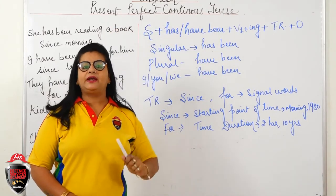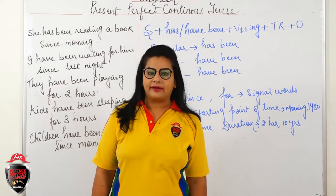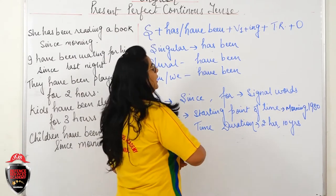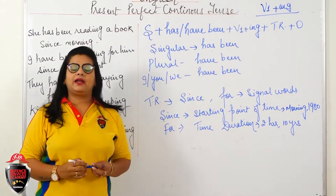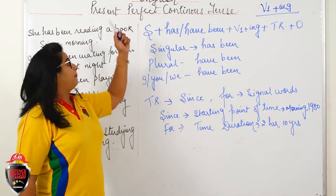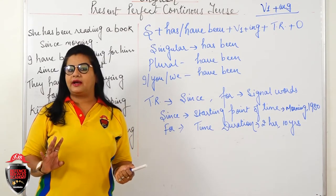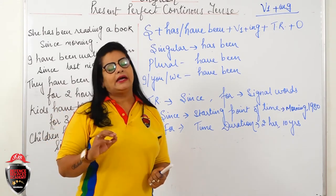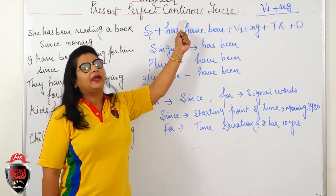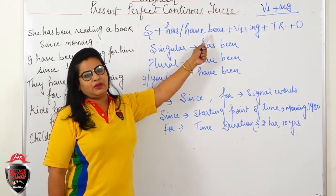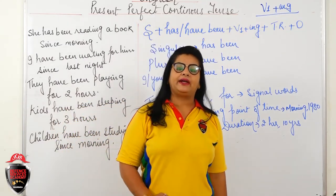Present Continuous Tense uses V1 plus ING. Present Perfect uses 'has' or 'have'. Present Perfect Continuous Tense uses 'has/have been' plus V1 ING.